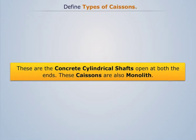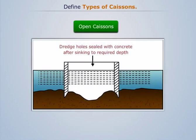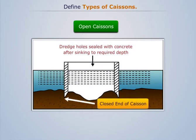Open caissons are concrete cylindrical shafts open at both ends. These caissons are also monolith. An open caisson installed in the land is shown in the image. After installing, one end of the caisson is closed by the soil and acts as a water inlet for the well.